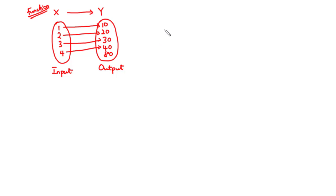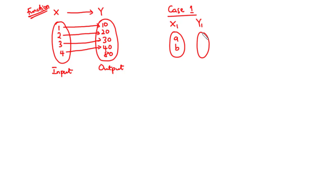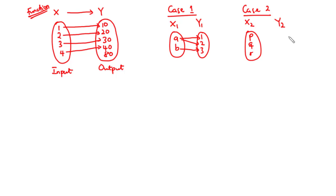Now let's consider two other cases. In Case 1, the set X1 is made up of elements a and b, and the set Y1 is made up of elements 1, 2, and 3. Here, a maps to 1, a also maps to 2, and b maps to 3. In Case 2, the set X2 is made up of elements p, q, and r, and the set Y2 is also made up of elements 1, 2, and 3. Here, p maps to 1, q maps to 1, and r maps to 3.